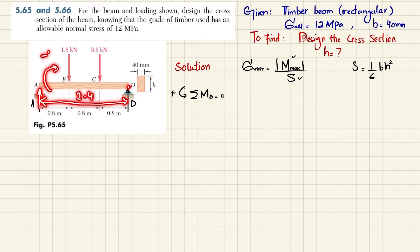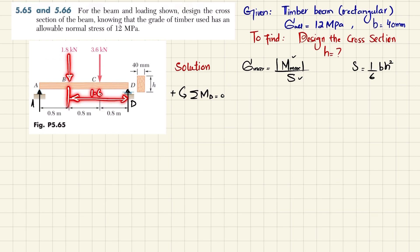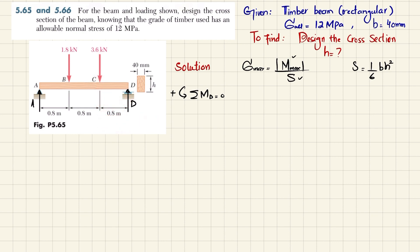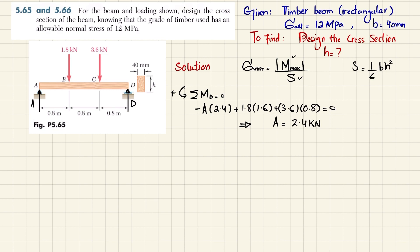About point D: the moment due to force A at perpendicular distance 2.4 m is clockwise (negative). The moment due to 1.8 kN at distance 1.6 m is counterclockwise (positive). The moment due to 3.6 kN at distance 0.8 m is also counterclockwise (positive). Solving: −A × 2.4 + 1.8 × 1.6 + 3.6 × 0.8 = 0, giving A = 2.4 kN.